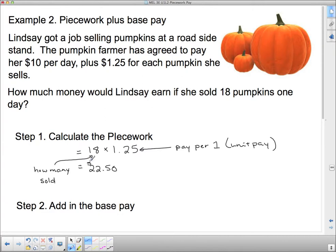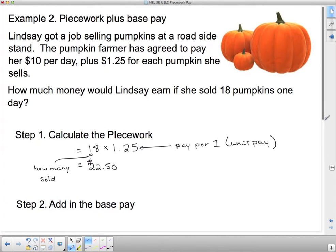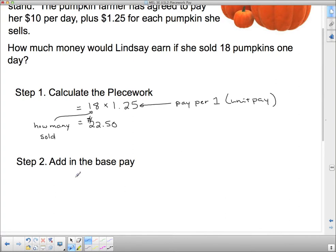Step 2: Add in the base pay. The farmer is going to give her some money on top of that. So we take our $22.50, which is the piecework pay, and add in the $10, which is the base pay. In total, she makes $32.50.